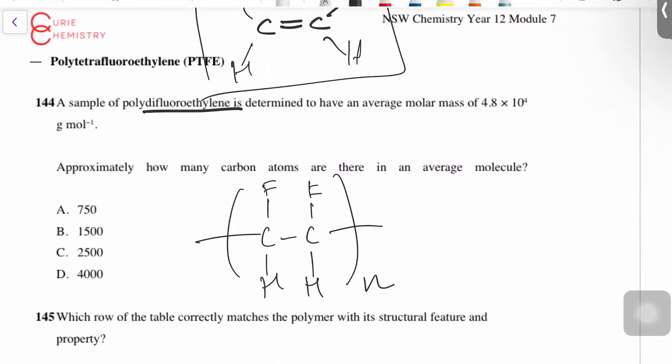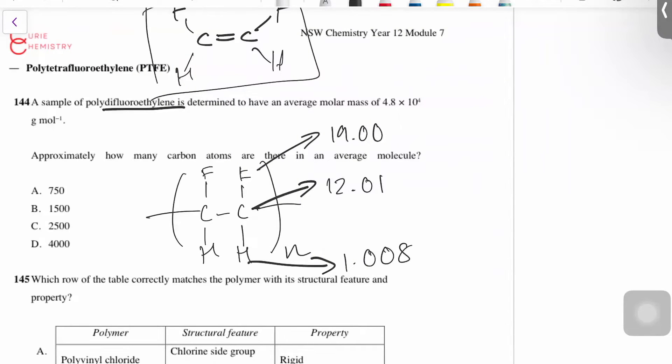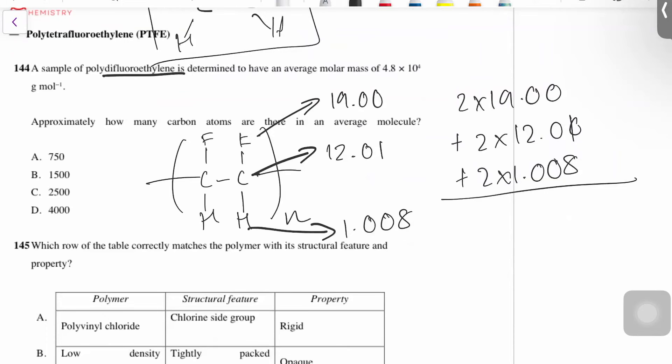And then I need to calculate the molar mass of my monomer. So what's the molar mass of fluorine? 19.00. So if I'm calculating the molar mass of my monomer, it's going to be 2 times 19.00 plus 2 times 12.01 plus 2 times 1.008. And then if I sum that all up, what's the molar mass of my monomer?